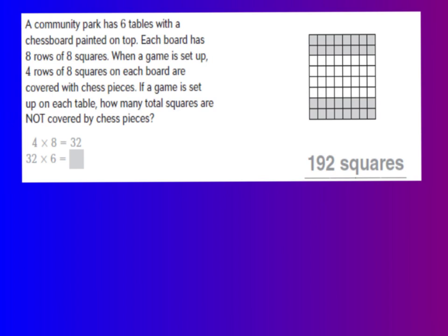Now remember, our question is asking us, how many squares are not covered by chess pieces? So if we look at our diagram, that's the non-shaded area. So we have 1, 2, 3, 4 rows of 8 squares that are not shaded. So that's 4 times 8, which gives us 32 squares on each table are not covered by chess pieces. Well, remember, it says that there are 6 tables that we need to find how many are not covered by chess pieces. So this is only 1.